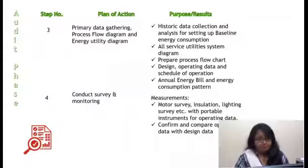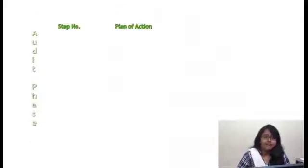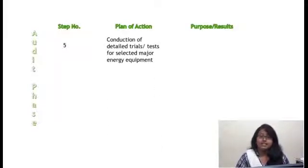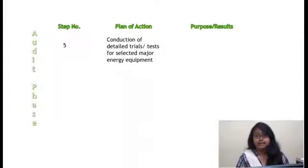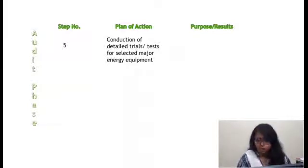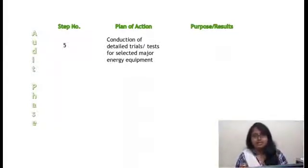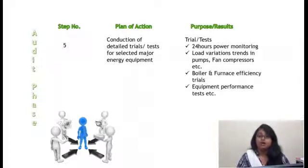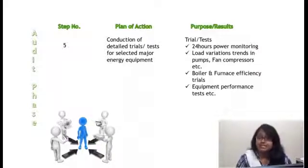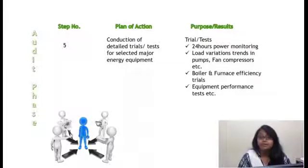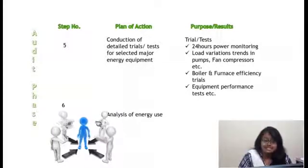The answer to all these things is obtained from survey and monitoring. Then, in the audit phase, step 5 is the conduction of tests of selected major energy-consuming equipment, such as boilers. So all these places where more energy is consumed are targeted. Actually, the detailed energy audit is a summary that merges the preliminary, targeted, and detailed approaches together. From this you get 24-hour power monitoring, information about load variants, boiler efficiencies, and equipment performance and test data.